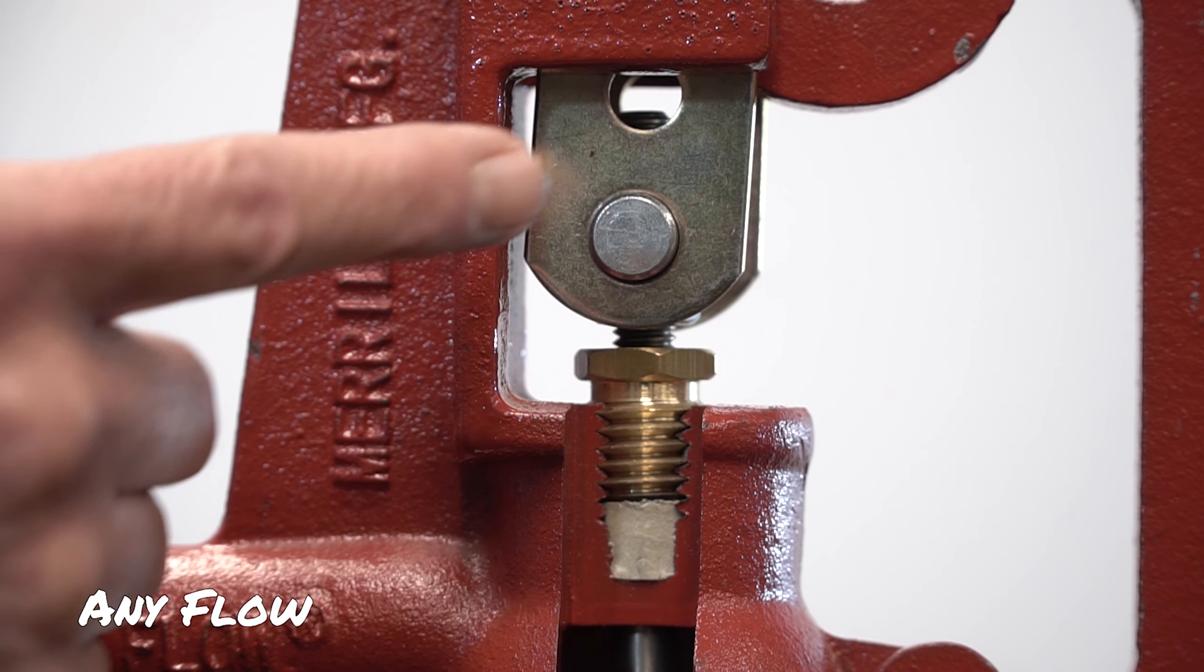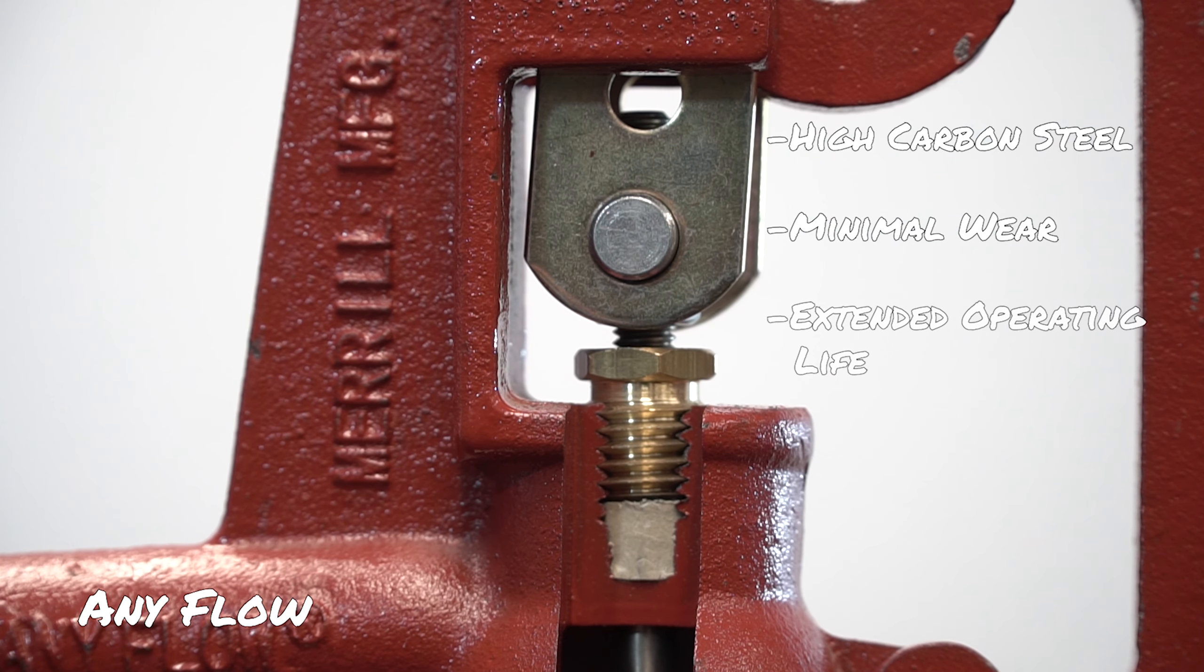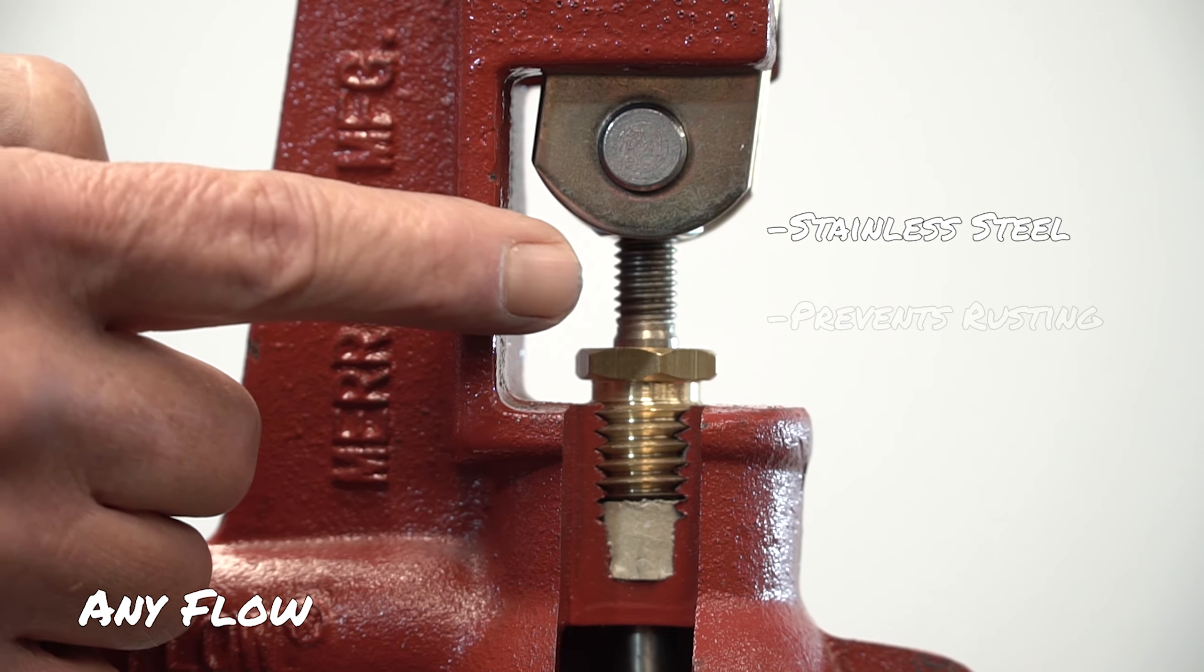Our draw straps are made of high-carbon steel, ensuring minimal wear and guaranteeing an extended operating life compared to mild steel. The operating rod is made of stainless steel to prevent any possible rusting.